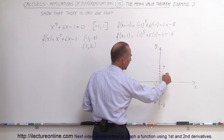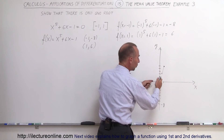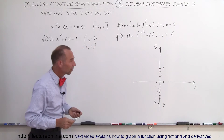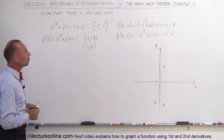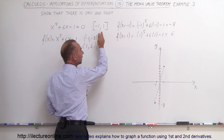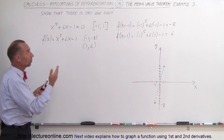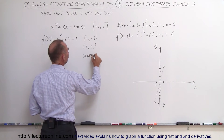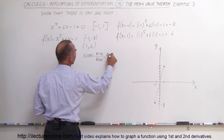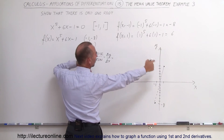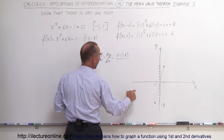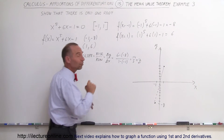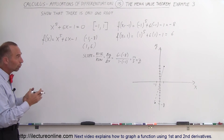The function could potentially dip and rise in various ways between those points, giving one, three, or five roots. To investigate, we find the slope of that straight line. The slope equals the rise over the run: (6 - (-8)) / (1 - (-1)) = 14 / 2 = 7. So the slope of that secant line is 7.